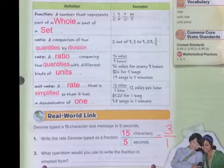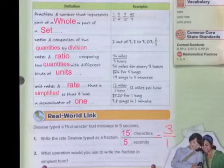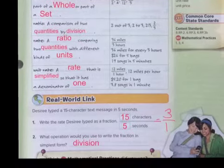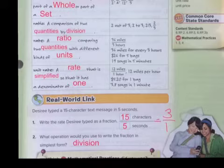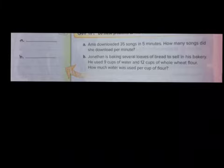And that would be my unit rate. So she can do three character texts in one second. What did I do? What operation would you use to write the fraction in simplest form? Division. And there you have it. That's page one. I hope this makes sense to you. If it doesn't, please re-watch the video.